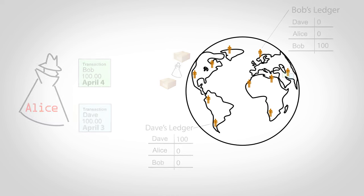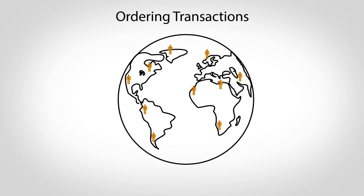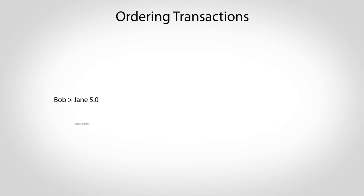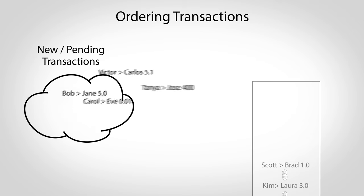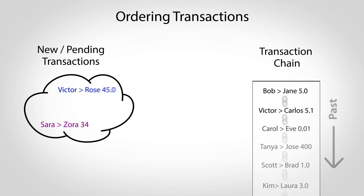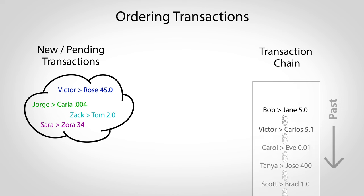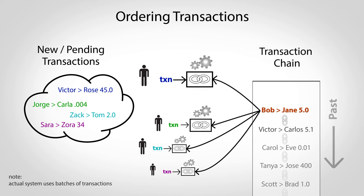Bitcoin prevents this by providing a way for the entire world to decide on transaction order. As new transactions are created, they go into a pool of pending transactions, and from here they'll be sorted into a giant chain that locks in their order. To select which transaction is next, a kind of mathematical lottery is held. Participants select a pending transaction of their choice and begin trying to solve a special problem that will link it to the end of the chain.